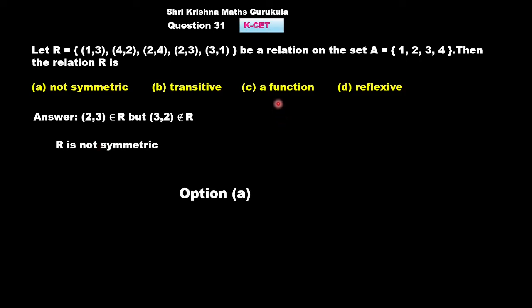And also if you want to check whether it is a function, we have to check for the first element of the ordered pair. 1, 4, 2, 2, 3. All four elements are mapped to some or the other element of the codomain set or set A itself. First condition for a relation to be a function is satisfied.